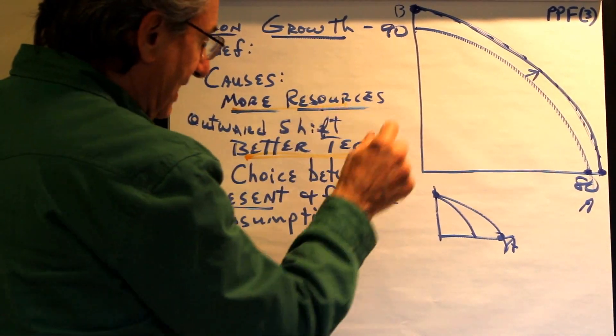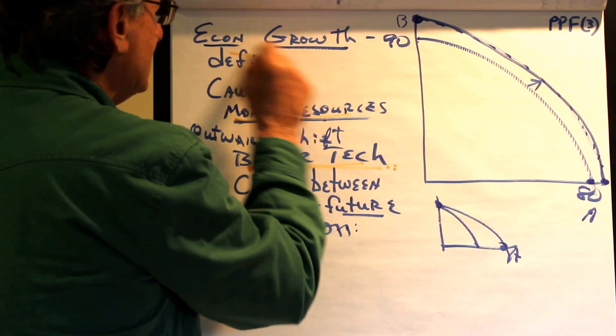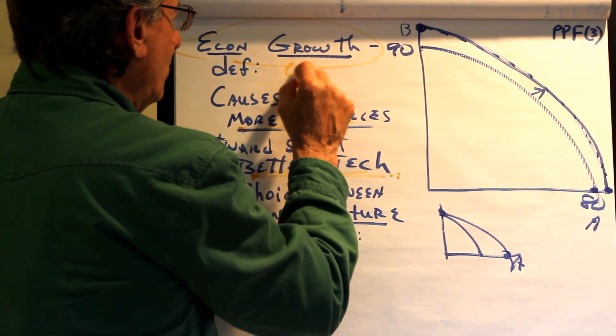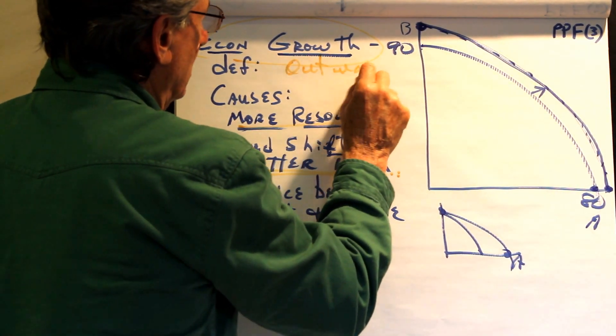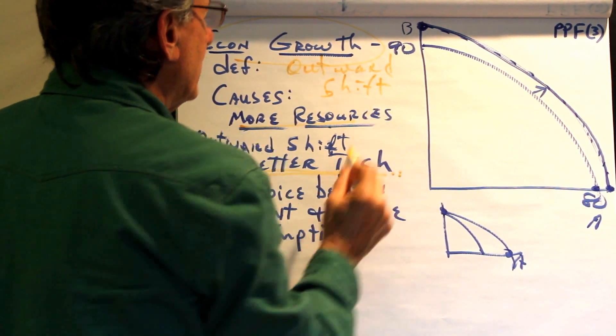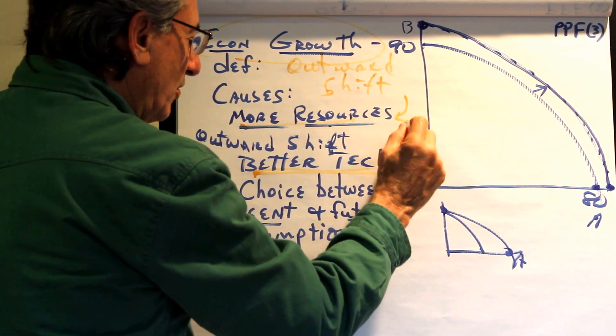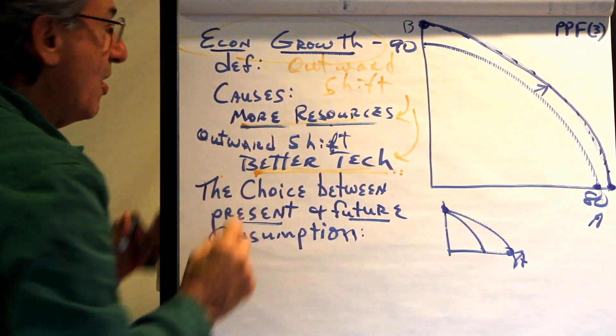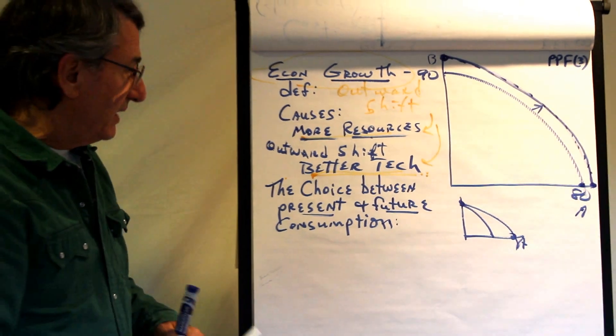And this is what is known as economic growth. It's an outward shift to the production possibilities frontier caused by more resources, better technology, or improved rules of the game.